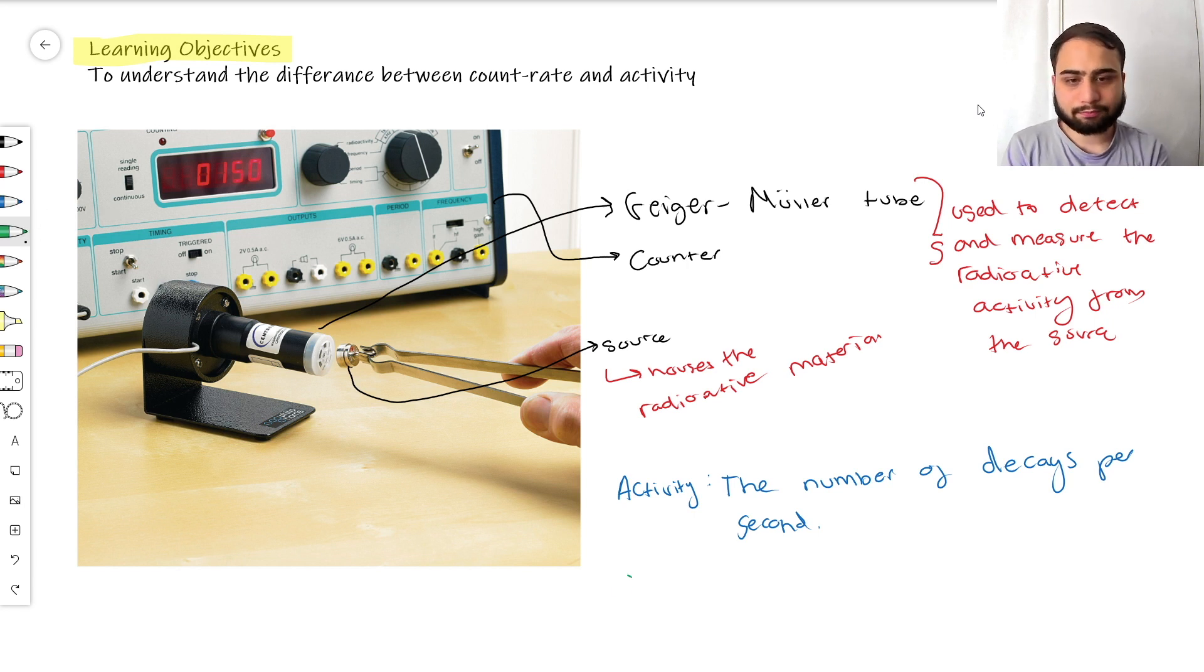Count rate is the number of radioactive particles detected - detected being the very key word here.